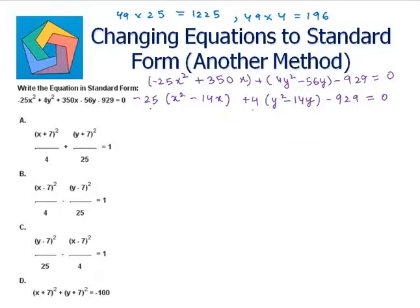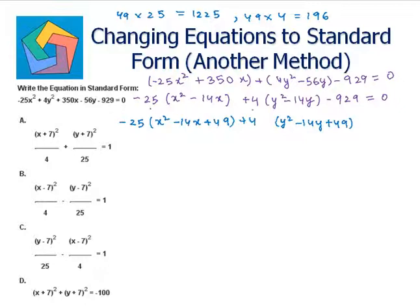So we will have minus 25 times (x squared minus 14x plus 49) plus 4 times (y squared minus 14y plus 49) plus 1225 minus 196 minus 929 equals 0. The plus 1225 is because the sign is minus here — we did minus 1225 inside the parenthesis, therefore to balance we do plus 1225.